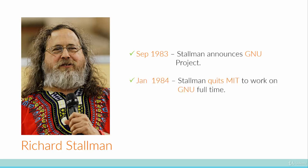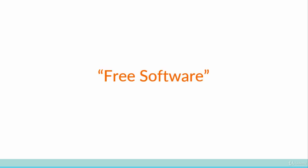In January 1984, Richard Stallman quit his job at the artificial intelligence lab at MIT to work on the GNU project full-time, with the aim of creating an operating system made of completely free software. Now the term 'free software' actually refers to several freedoms that the software gives the user, rather than being free as in money. So when you hear the term free software, think free speech and not free lunch.